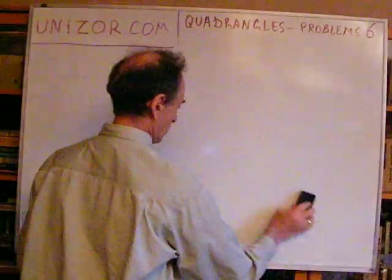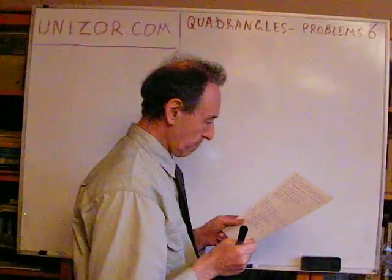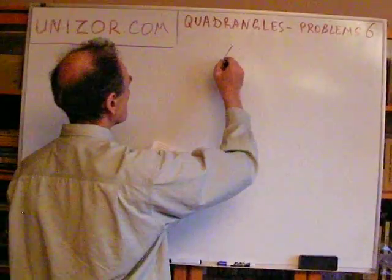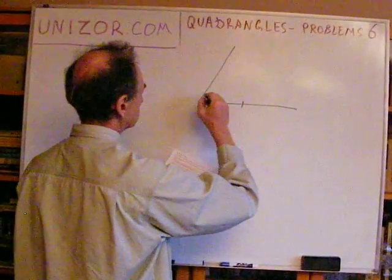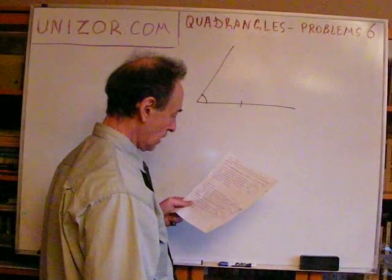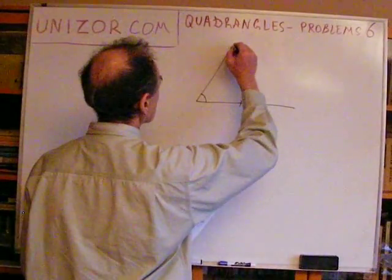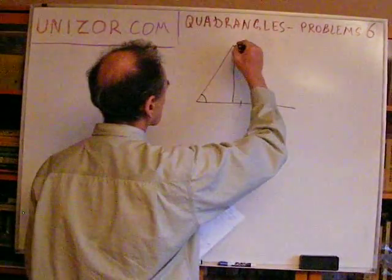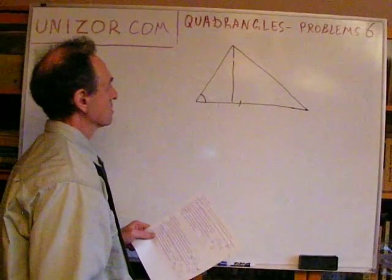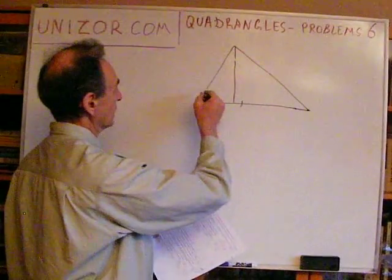Okay, number two: construct a triangle by a side, an angle it forms with another side, and an altitude onto it. It's more or less the same as before — we just have an angle instead of a side.